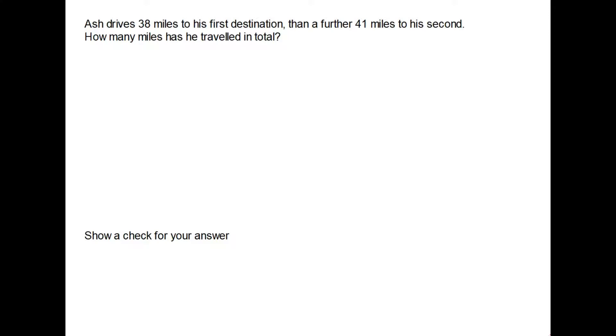So here's our first question. Ash drives 38 miles to his first destination then a further 41 miles to his second and we're simply being asked how many miles has he travelled in total. A straightforward question because all we are being asked to do is add up his total journey which is 38 plus 41. Or if you want to write it out in the correct format: 38 plus 41, 8 plus 1 is 9, 3 plus 4 is 7. So in total the answer is 79 miles.